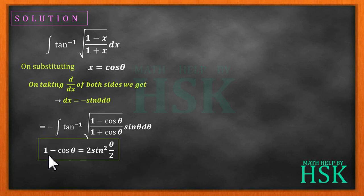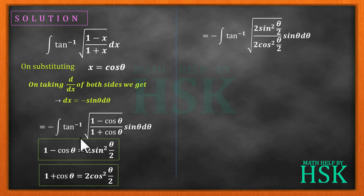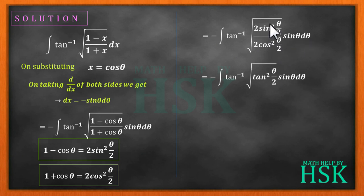Now I am going to replace (1 minus cos theta) with 2 sin squared (theta by 2), and (1 plus cos theta) with 2 cos squared (theta by 2). Placing these values, we get minus the integration of tan inverse of square root of (2 sin squared (theta/2)) upon (2 cos squared (theta/2)), times sin theta d theta. The 2s cancel, giving us tan squared (theta by 2) under the square root.